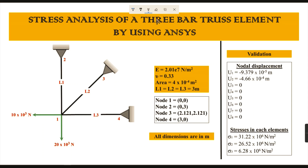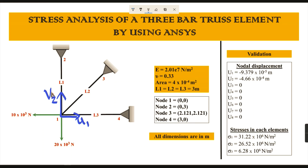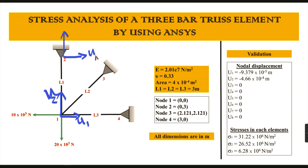Now we need to understand the displacements at each node — node one, two, three, and four. For node number one, the displacements are U1 and V1. For each node we have two displacement components, since this is a two-dimensional problem. Continuing the numbering: node two has U3 and U4, and node three has U5 and U6.